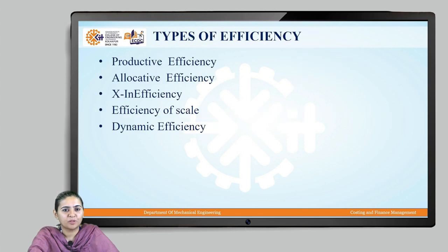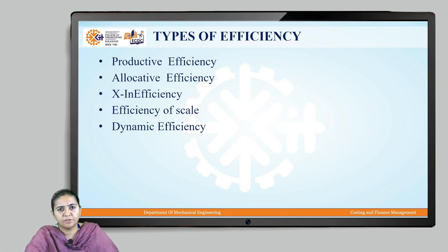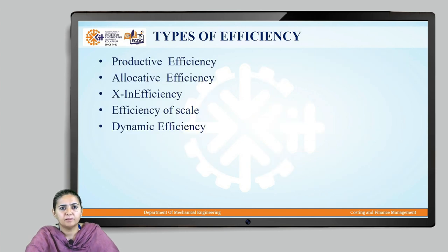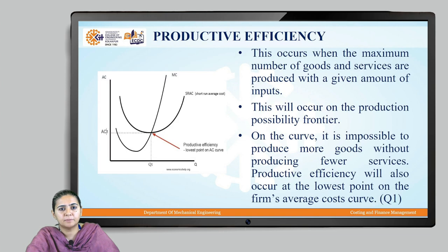Let us now go to the types of efficiency. We will be studying productive efficiency, allocative efficiency, X efficiency, efficiency of scale, and dynamic efficiency. Let us start with the first one: productive efficiency.